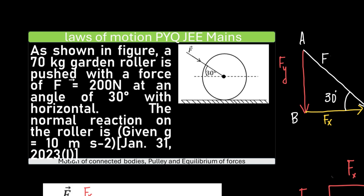So, we have the roller. Force F of 200 Newton is given to it at an angle of 30 degrees with the horizontal. The normal reaction is being asked.